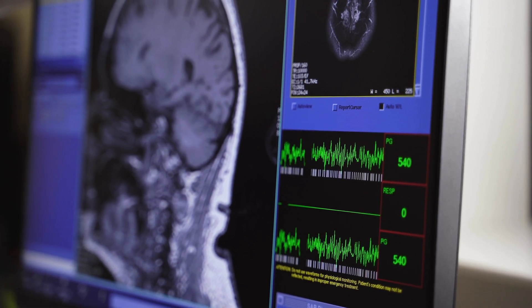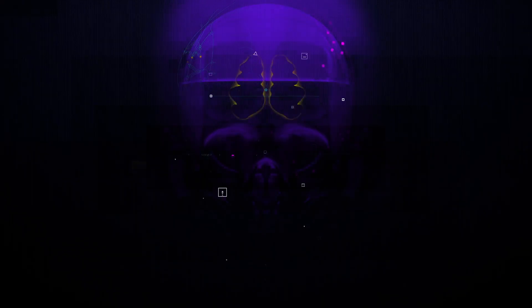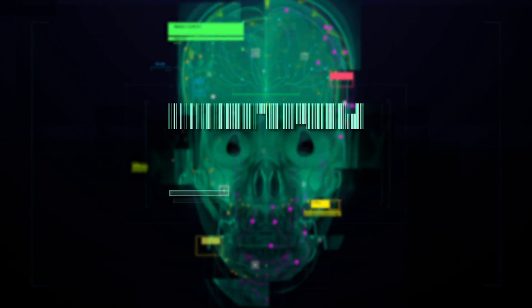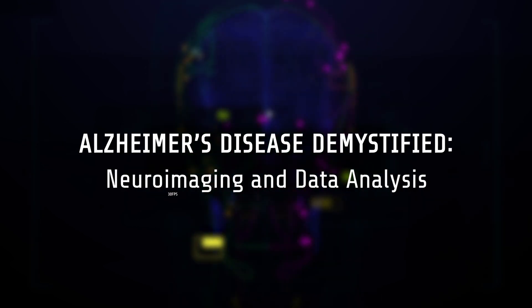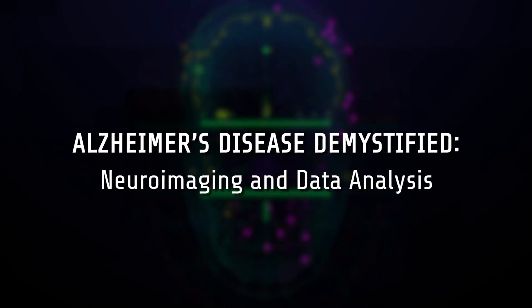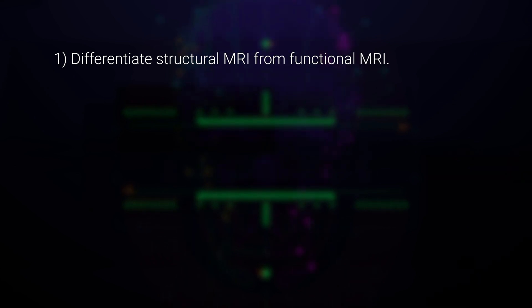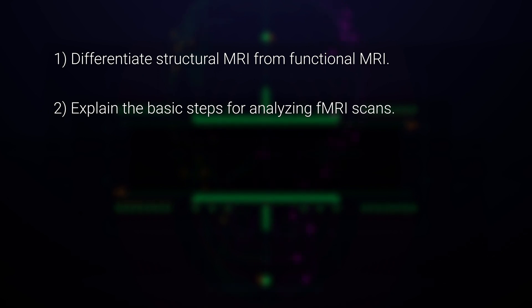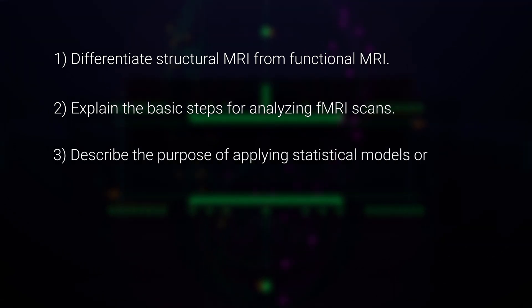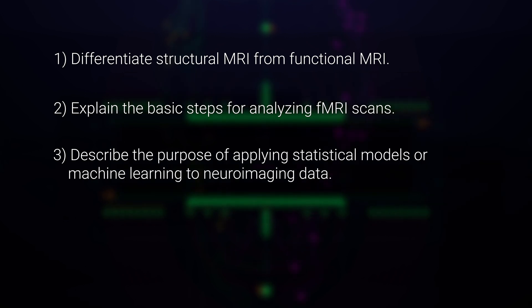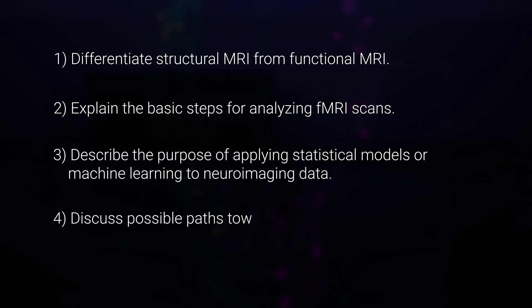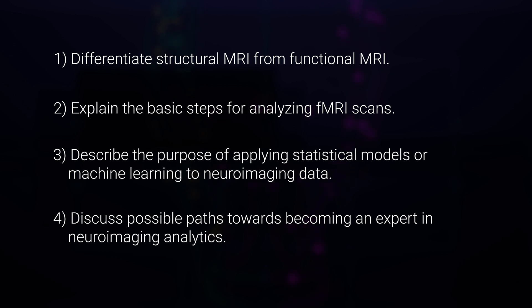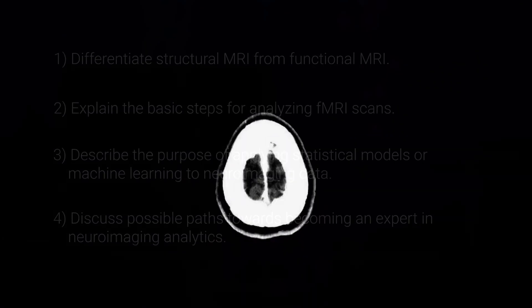In this video, we will review various neuroimaging techniques that provide data about brain structure and function, and discuss some methods for analyzing that data. After watching this video, you should be able to differentiate structural MRI from functional MRI, explain the basic steps for analyzing fMRI scans, describe the purpose of applying statistical models or machine learning to neuroimaging data, and discuss possible paths toward becoming an expert in neuroimaging analytics.